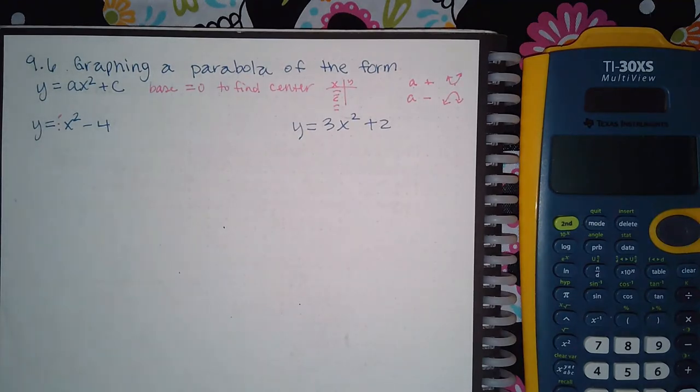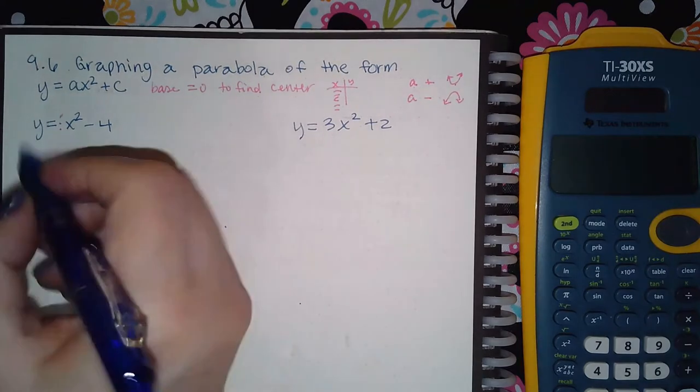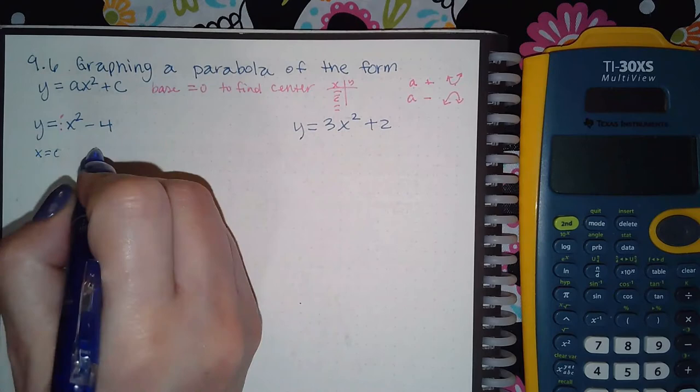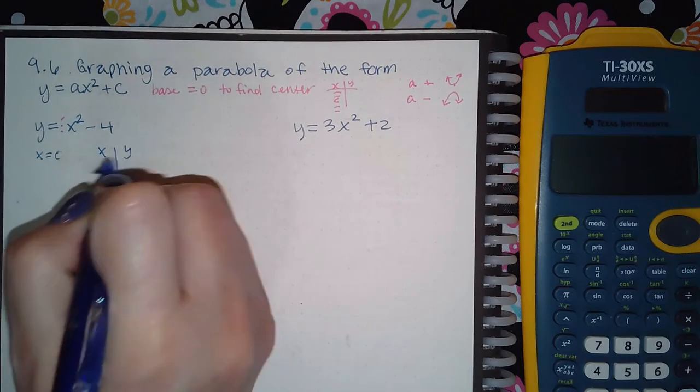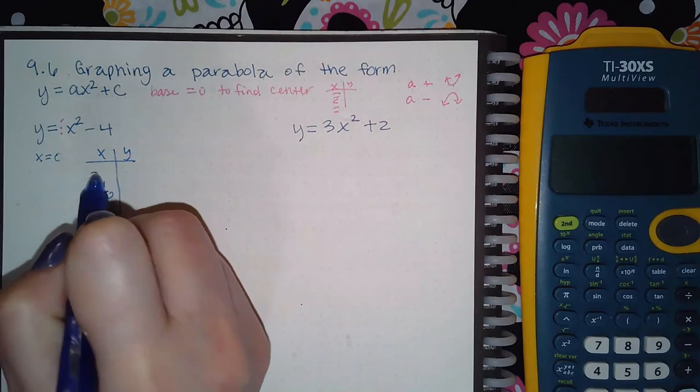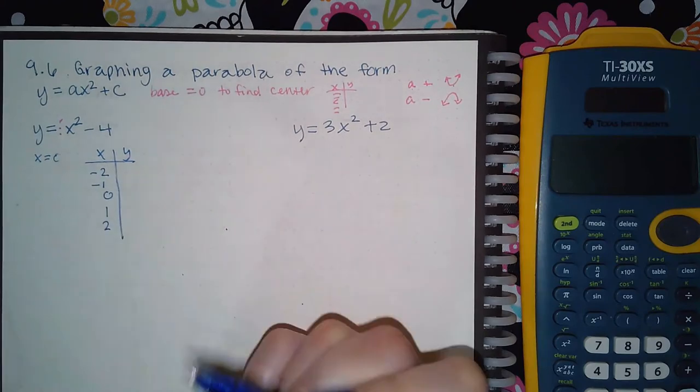Let's start with the problem. If I take the base, the base happens to just be x, and if I equal it to zero, I get zero. Which tells me that when I create this chart, I'm going to put zero in the middle and then pick two x values to the left and two x values to the right.